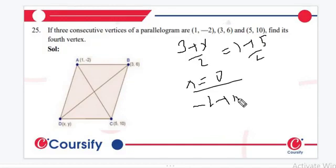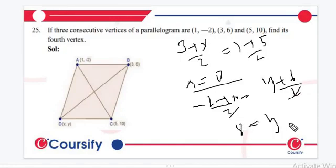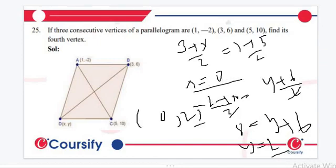And now from this simplification, we can write (-2+10)/2 which equals to (y+6)/2. So -8 is equal to y+6. So the value of y must be equal to 2. So x equals to 0 and y equals to 2. This will be the fourth vertex.